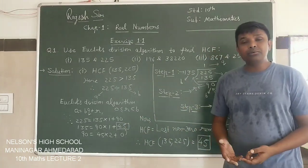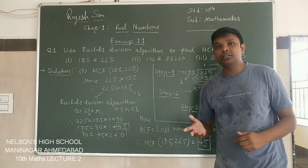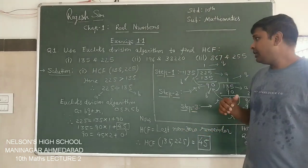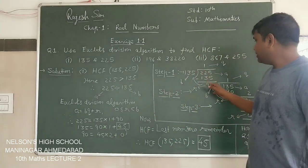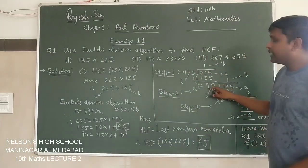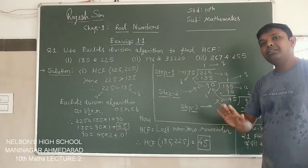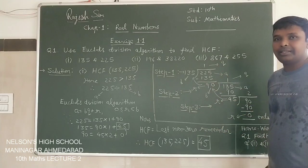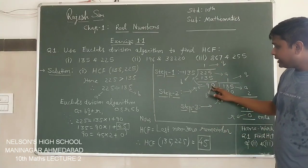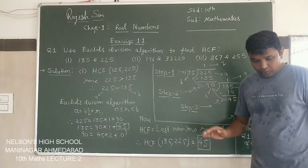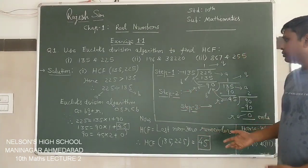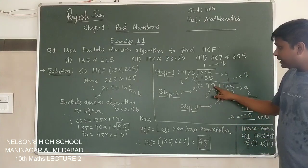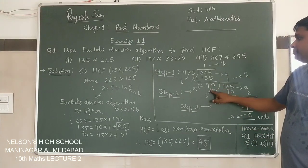This is the first step we have done. Now the question comes, how many steps we have to do? It depends on the question. When you divide, whenever you reach the remainder as 0, then your step ends there. Here we are not getting remainder as 0, so the next step we have to go.